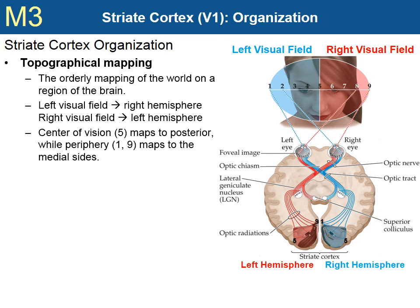Notice also that the figure shows the eyes are fixated on the bridge of the woman's nose, directly between her eyes — this is point number five. Now, look at the striate cortex. Notice that point number five is located on the posterior striate cortex, the very back. Whereas points one and nine, the periphery of the visual field, correspond to the medial, center areas of the striate cortex.